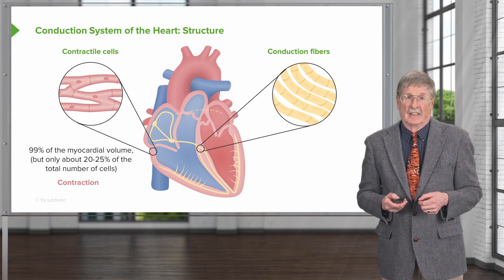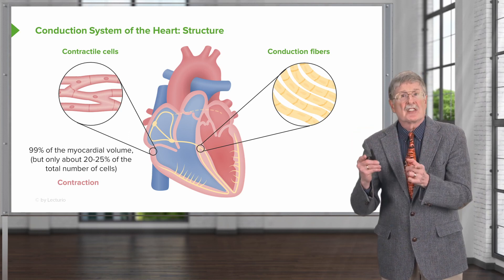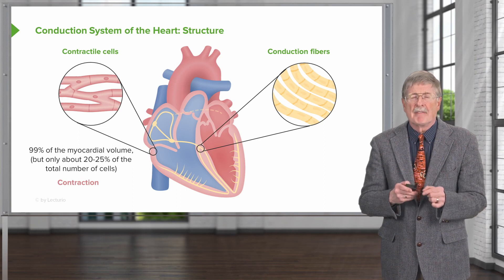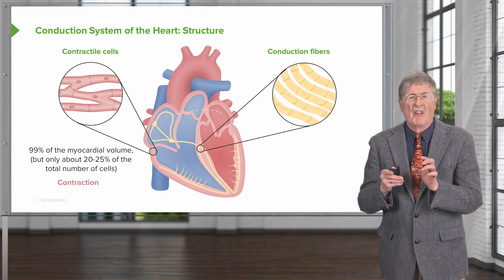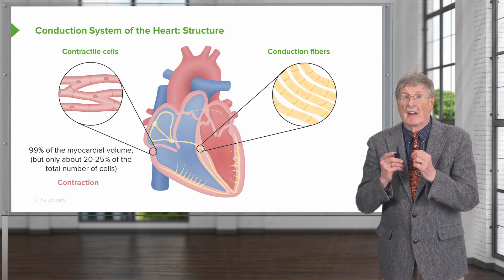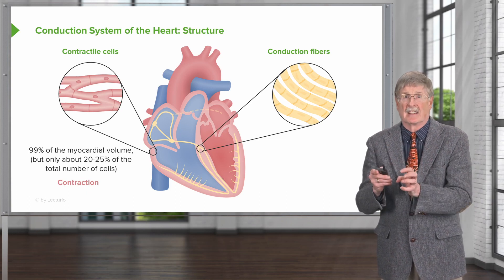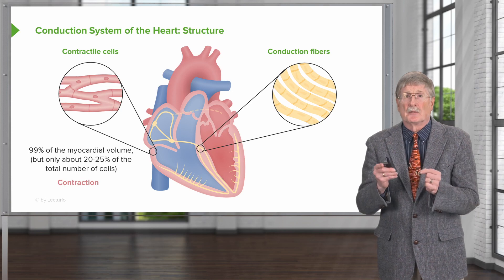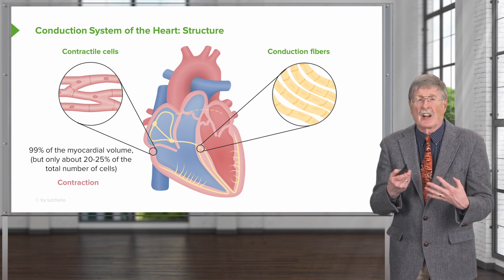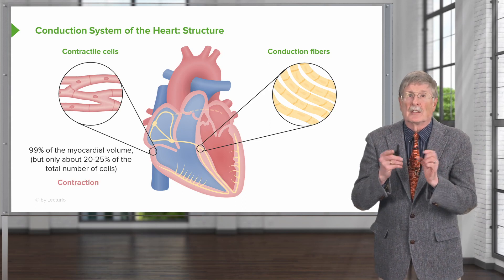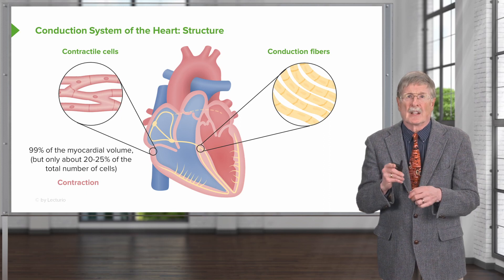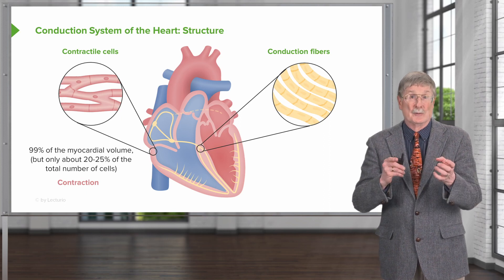On the other hand, we have the conduction fibers. The conduction fibers are, in fact, modified cardiac myocytes. They are not nerve fibers; they are not nerve bundles. They have many of the same structural features — they actually have sarcomeres — and they have a higher glycogen content with some subtle changes. But they are mainly there to conduct signals very rapidly from one point to another without using nerves.